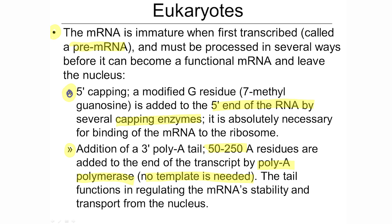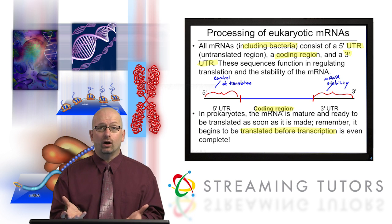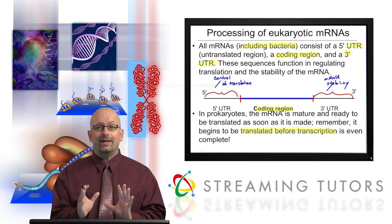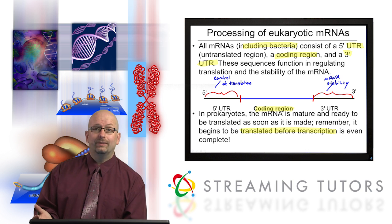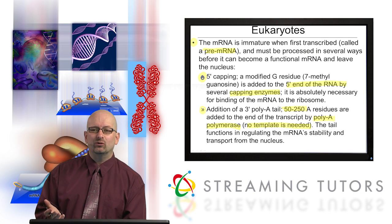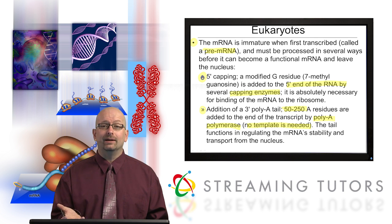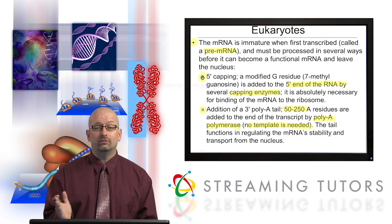The poly-A tail functions in regulating the messenger RNA's stability and transport from the nucleus. Don't get confused: all messenger RNAs have the 5' and 3' UTR, which may have functions having to do with control and stability. In eukaryotes, the additional poly-A tail is put on, and there's evidence that it is important in regulating stability. The 3' UTR also functions in eukaryotes, but it's a separate thing.